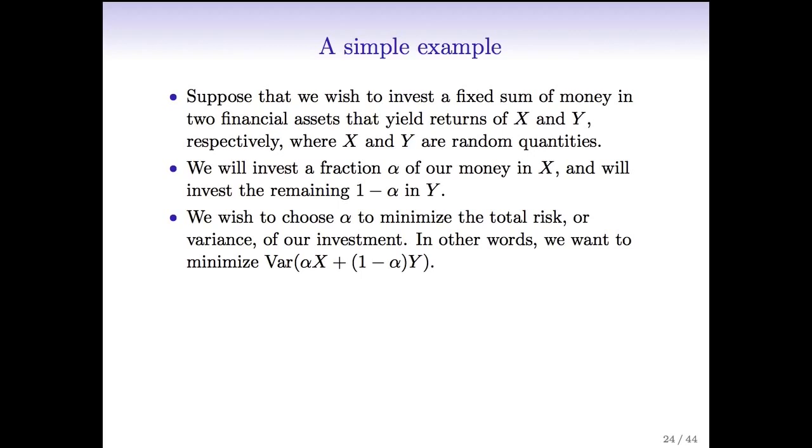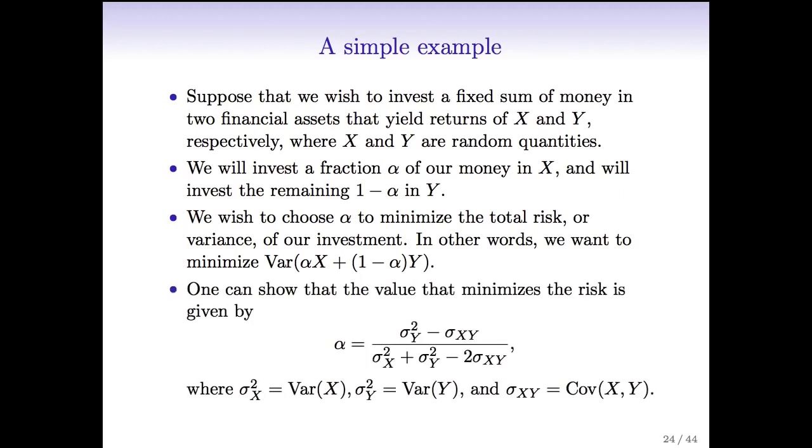In this case, we'll see the bootstrap. The idea of a bootstrap is we're going to use the data itself to try to get more information about our estimator. So let's start with a simple example. Suppose we have a fixed sum of money that we want to invest in two assets that yield returns X and Y, where X and Y are random quantities depending on how the assets do. And we want to invest a fraction alpha of our money in X and the remaining 1 minus alpha in Y. We want to choose the fraction alpha to minimize the total risk or the variance of our investment. So we have random variables X and Y. We want to choose the alpha to minimize the variance of alpha X plus 1 minus alpha times Y.